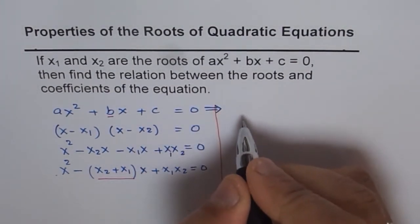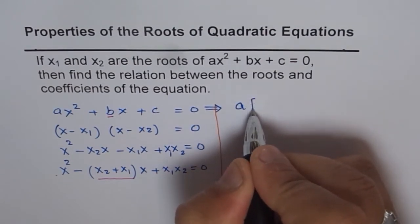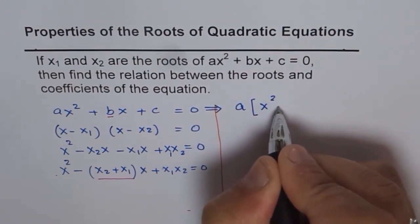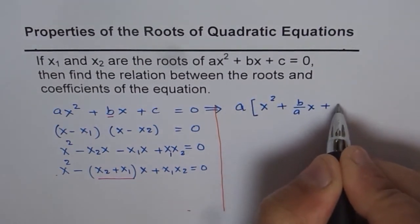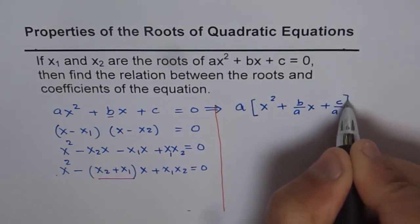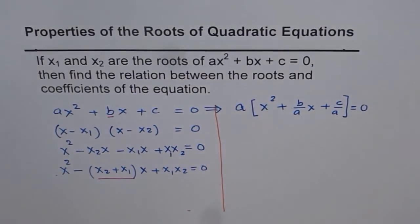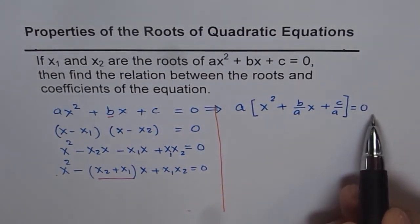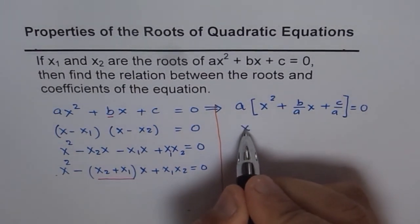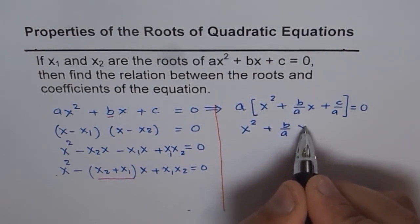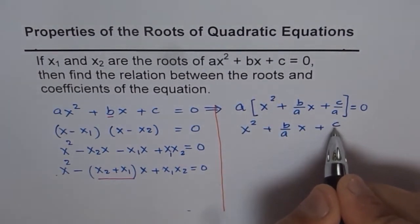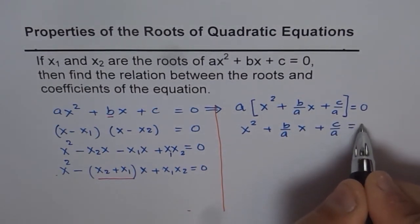So let us factor a from this equation. From here, we get a when factored out, we get x squared plus b over a times x plus c over a equals 0. Well, we can divide both sides by a. So we basically have x squared plus b over a times x plus c over a equals 0.